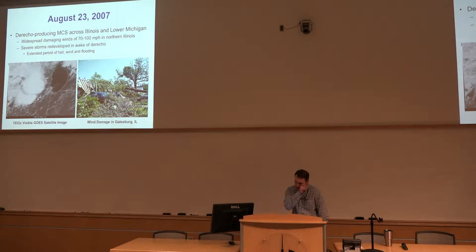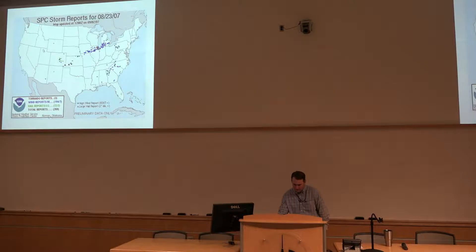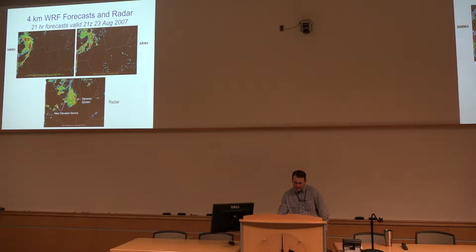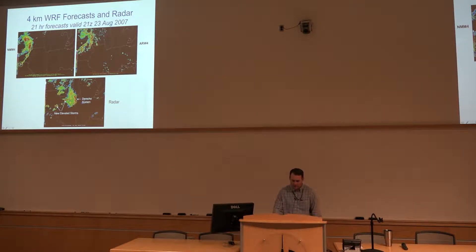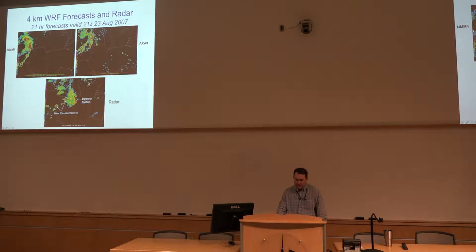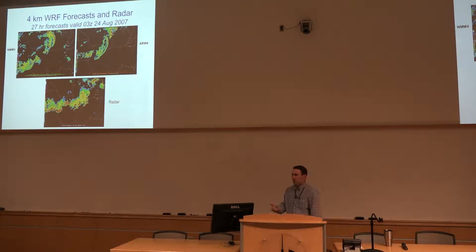Here's the derecho of August 2007 — you see the swath of wind reports across northern Illinois into southern lower Michigan. You can really see the evolution in the NMM forecast. Clearly there's a strong circulation within the model evolution of that MCS, and you can see the bowing nature of the reflectivity signature. It's a little smaller scale in the ARW. There's actually a sort of secondary one which is not exactly right obviously, but it's information to the forecaster — maybe you should be thinking about the wind threat with this MCS.